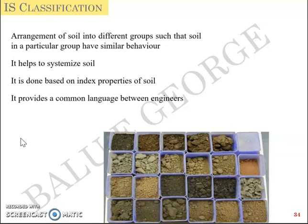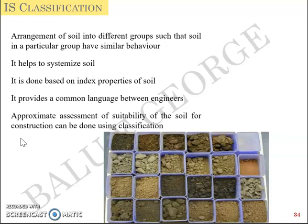For example, if you are an engineer at a site and you identify the soil to be well-graded sand, what you communicate to the design engineer 300 kilometers away would be just two sets of words: 'well-graded sand' or 'SW'. The design engineer at the design office will get a feel of what the soil is and how it would behave. So this classification gives a common language between engineers, and the approximate assessment of suitability for construction can be done using it.